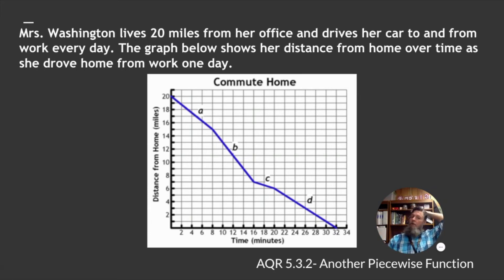All right, so Mrs. Washington lives 20 miles from her office and drives her car to and from work every day. The graph below shows her distance from home over time as she drove home from work one day. Now, this is a distance away from home over time. So, she starts at 20 miles away. And then in 8 minutes, she's only 15 miles away. And then in 16 minutes, she's only 7 miles away. In 20 minutes, she's 6 miles away. And then in 32 minutes, she's home or 0 miles away.